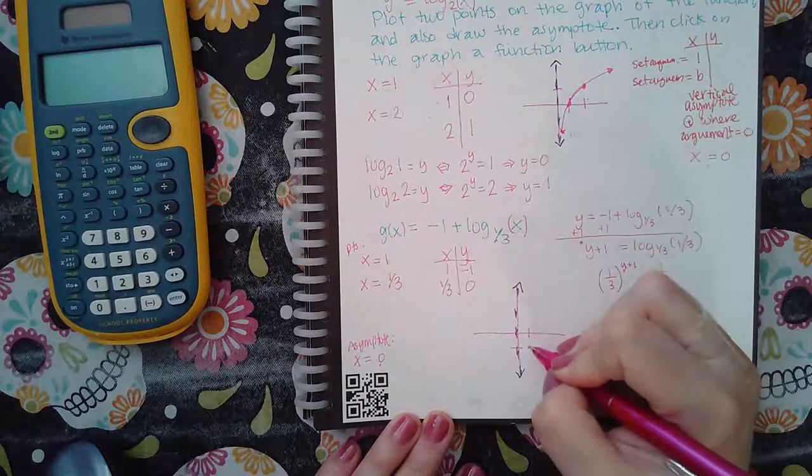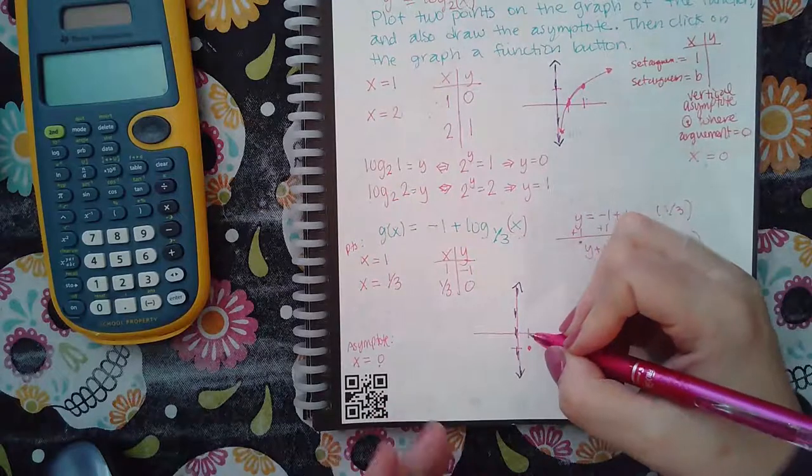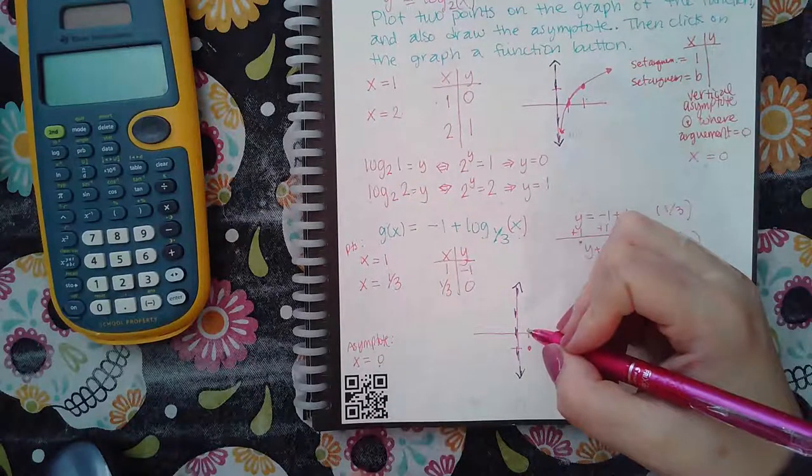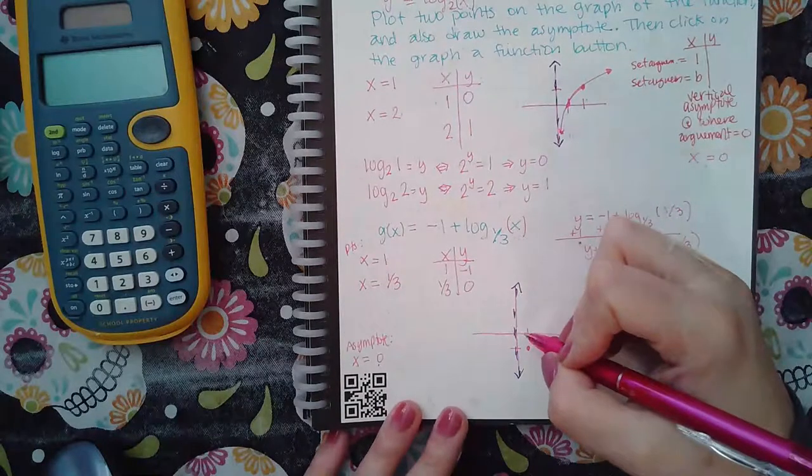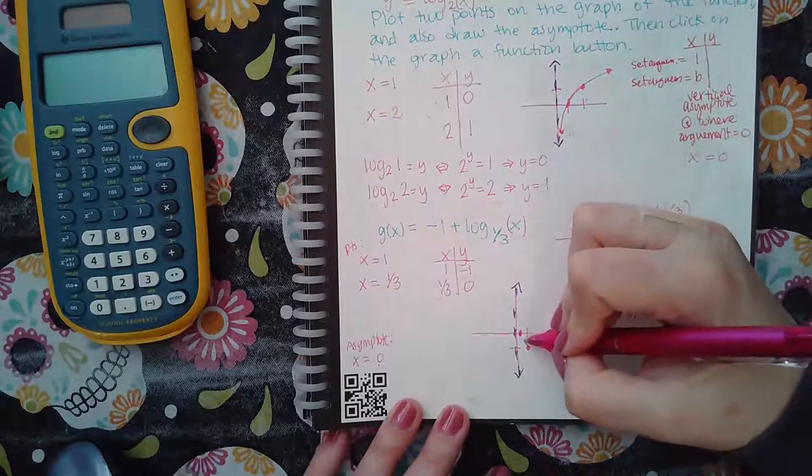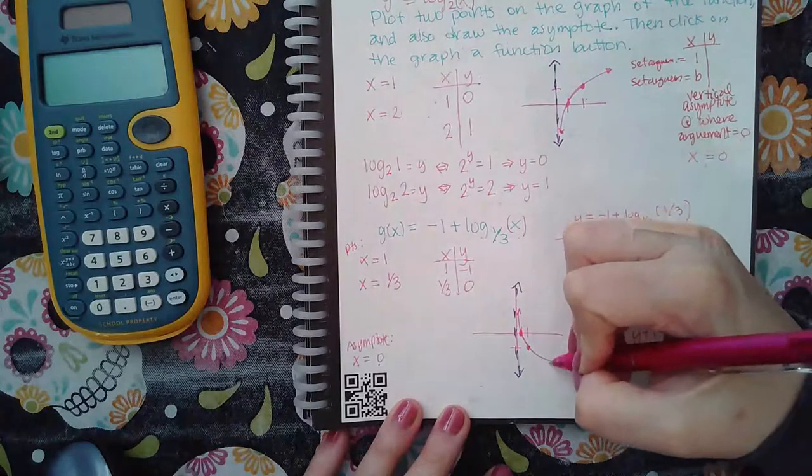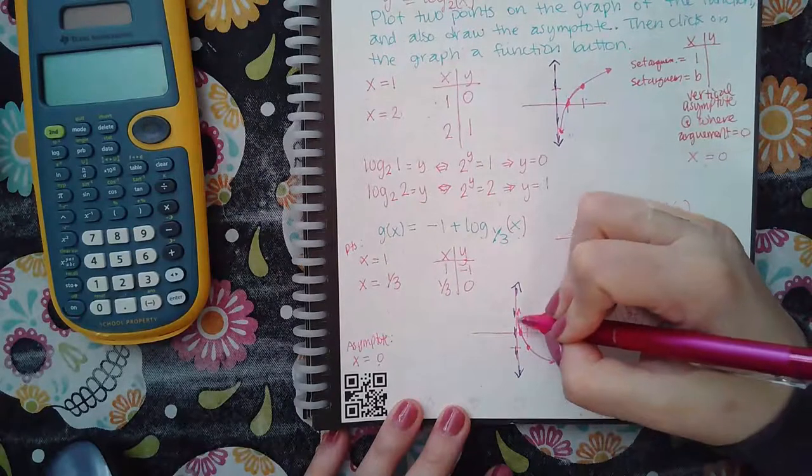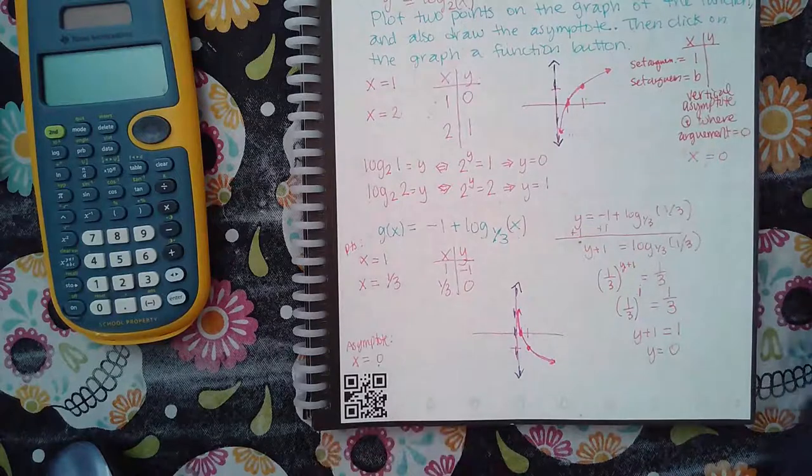one and negative one, and then one-third and zero. And so you might have to use that graphing button to plot that point, because you can't really graph one-third zero on your own. But it is right here. And so then what happens is, is it looks like this.